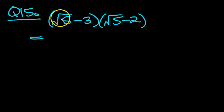So the first term will be this one here, root 5 times root 5, which is just 5. Then you've got minus 2 root 5 from the second term. And then the third term, minus 3 root 5.